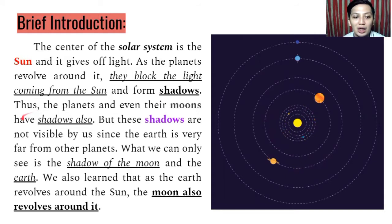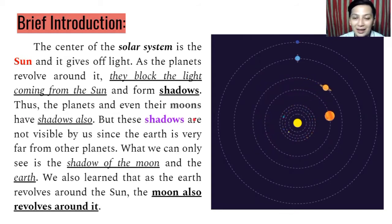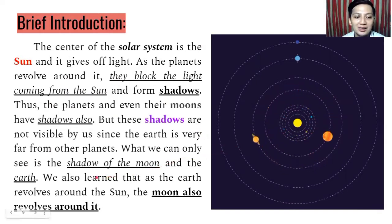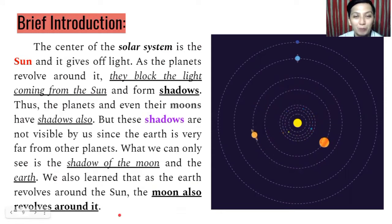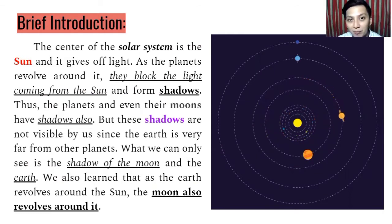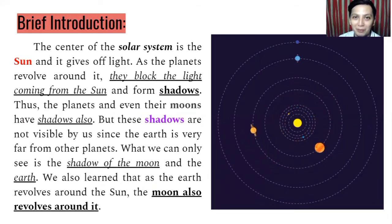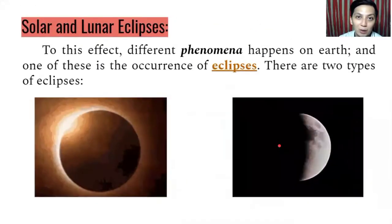These shadows are not visible to us since the Earth is very far from other planets. We are the third planet away from the sun. What we can only see is the shadow of the moon and the Earth. We also know that as the Earth revolves around the sun, the moon also revolves around it. The Earth rotates on its own axis and revolves around the sun — same with the moon, which has its own rotation and revolves around the Earth.